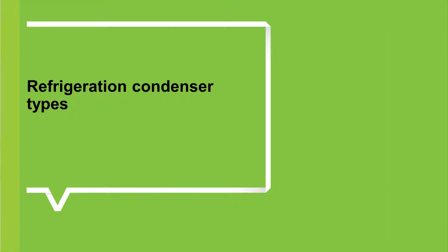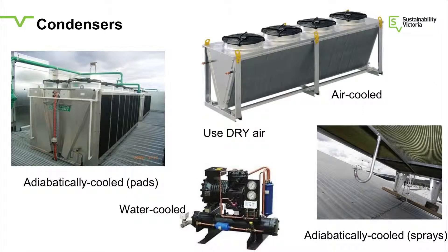Now, condensers. There are different types. Air-cooled condenser is the most common — the only reason it's common is because it's cheap and you don't need anything else. Air-cooled condensers use dry air. Then you have various water-assisted systems: pad-cooled adiabatic units, which have a wetted pad that draws air through and cools it; spray-cooled adiabatic condensers, where a water mist cools the air before it hits the condenser; and water-cooled ones where there's no air at all — water is passed through and separately cooled in a cooling tower.